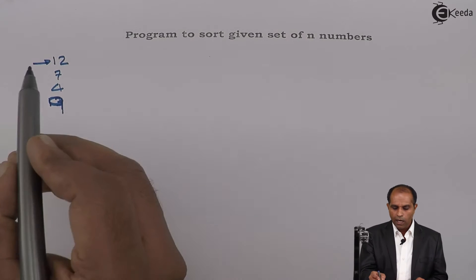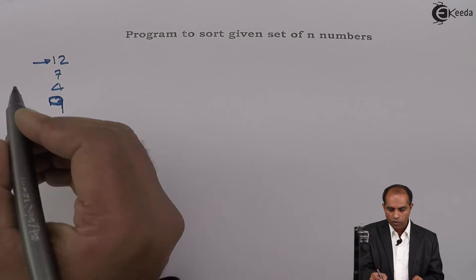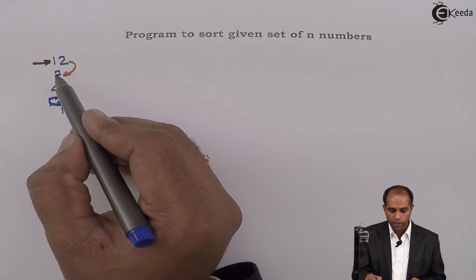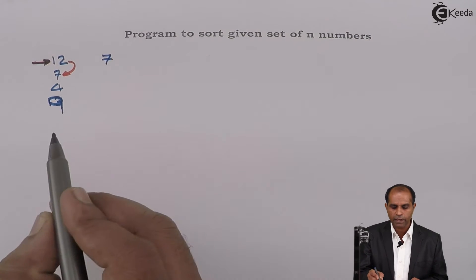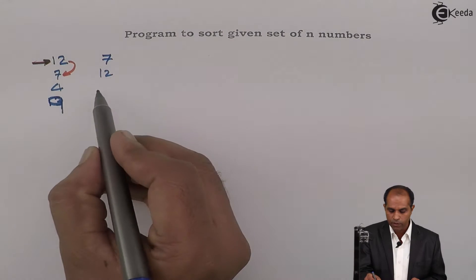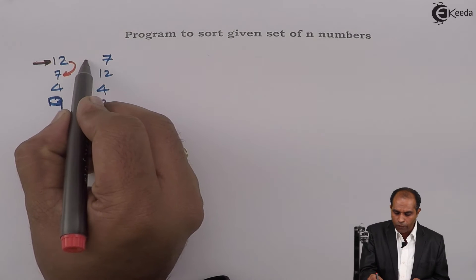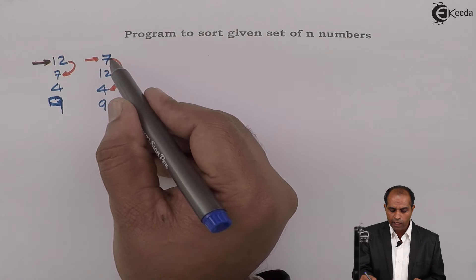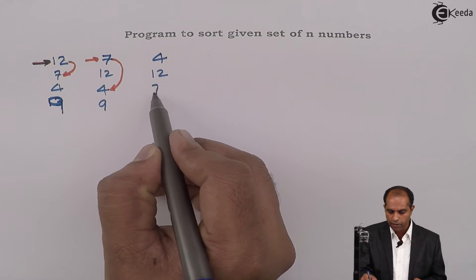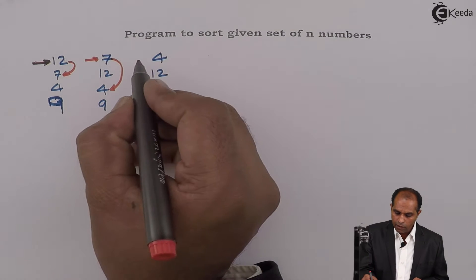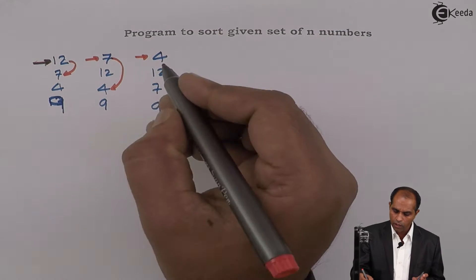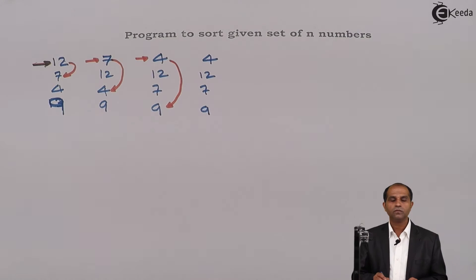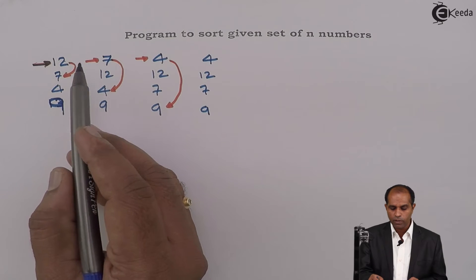In the first step, I will compare the first number with the remaining numbers of the list. So 12 needs to be compared with all the numbers of the array. Since I am supposed to arrange the numbers in ascending order, I will ask: is 12 greater than 7? Yes — true — so I interchange these two values, giving 7, 12, 4, 9. Next, is 7 greater than 4? True — interchange again. Now is 4 greater than 9? No — keep the number as it is, giving 4, 12, 7, 9. I compared the first number with all remaining numbers.